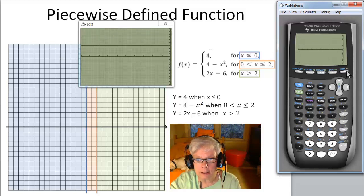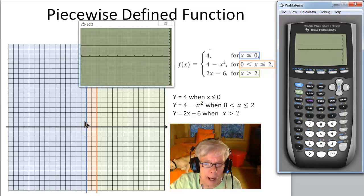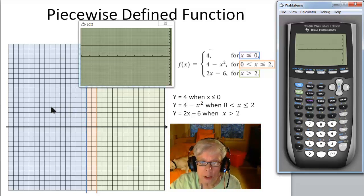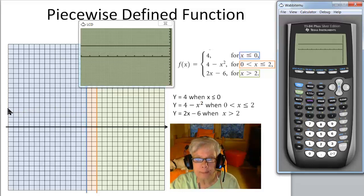There, that's what it looks like. And so when I actually graph this on paper, I'll come up 1, 2, 3, 4, and graph a line from here going to the left forever.